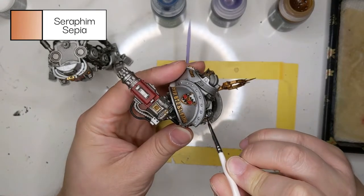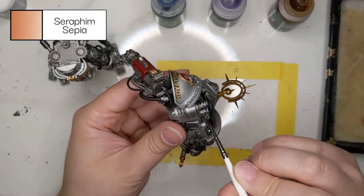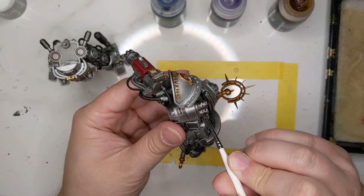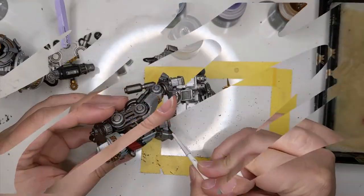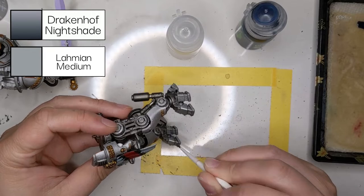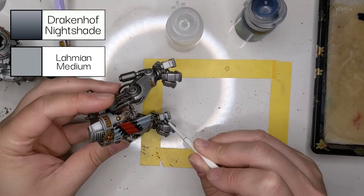Then go a little bit less further down with Drukhari Violet, and then just a little bit further down with Seraphim Sepia. By the time you're done, you'll have a pretty burnt-looking exhaust system.